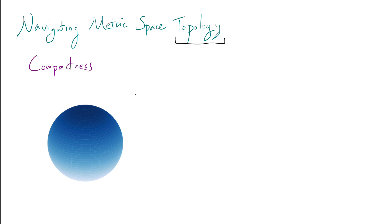Now let's switch it up. Suppose we have a sphere S2 and we have infinitely many points on the sphere. Here's my question: is it possible to have infinitely many points on S2 such that we do not have a limit point anywhere? Fascinatingly, this is not obvious at all. And this is essentially the definition of compactness — that's impossible. No matter how you place infinitely many points in S2, it is going to have at least one limit point. There is always going to be at least one point in S2 that we are approaching with the other points.